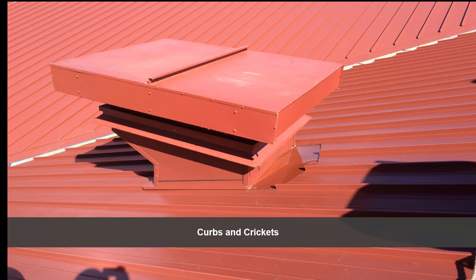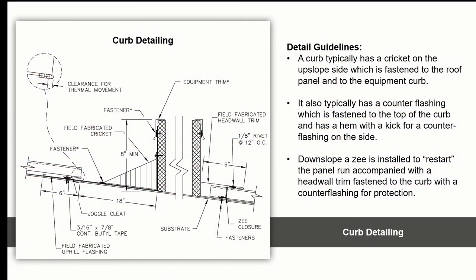Here is a proper installation of a curb with crickets. A curb typically has a cricket on the upslope side, fastened to the roof panel and to the equipment curb, in order to divert water around the sides so it doesn't collect and pool on the upslope side. It also typically has a counter flashing fastened to the top of the curb with a hem and kick for counter flashing on the side. Downslope, a Z is installed to restart the panel run, accompanied by a head wall trim fastened to the curb with a counter flashing for protection. This allows the upslope and downslope panels to move independently with the curb.